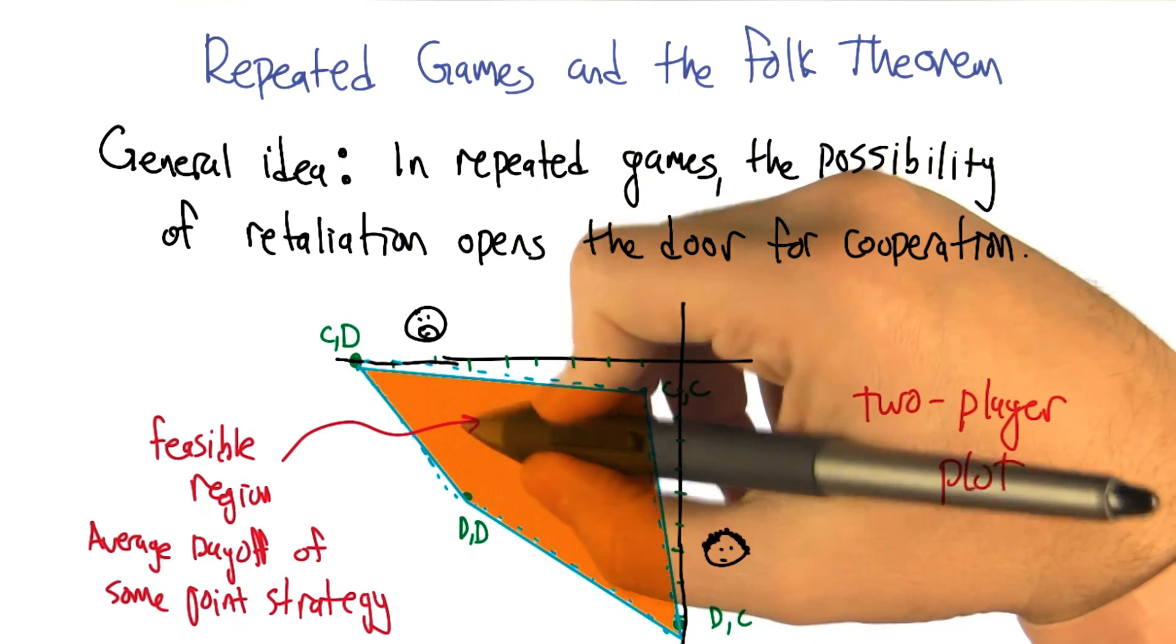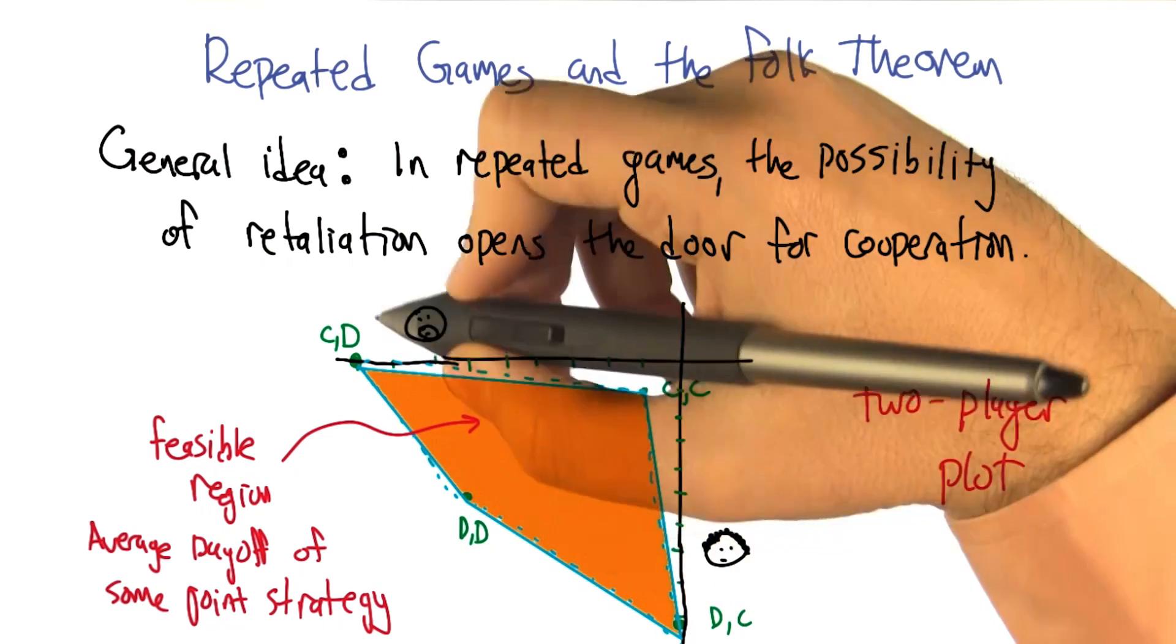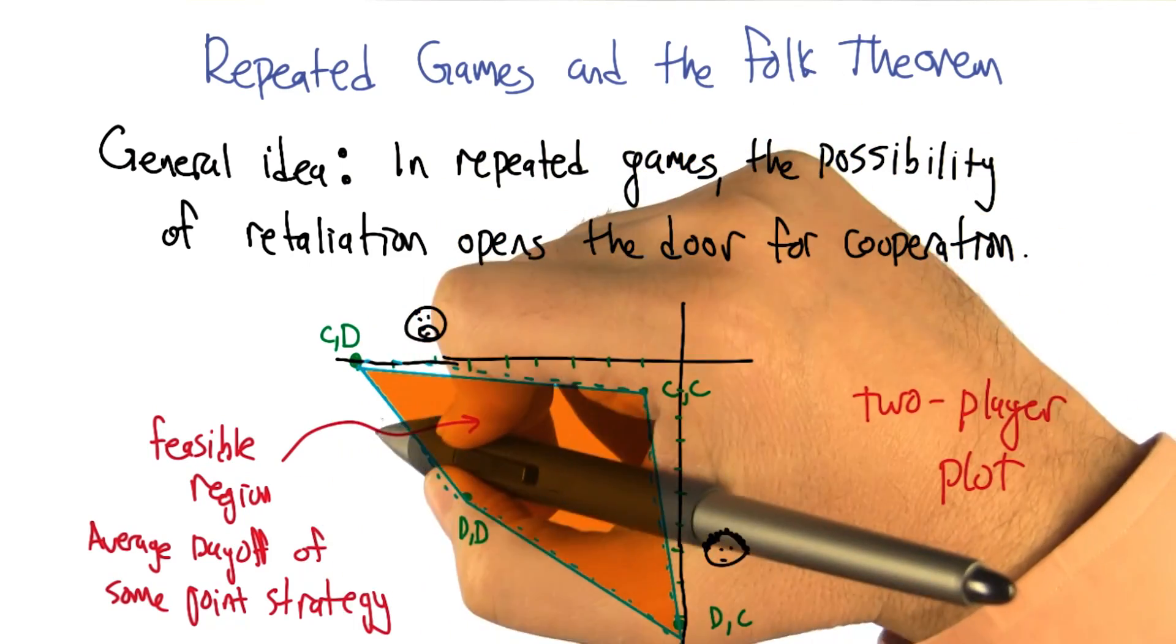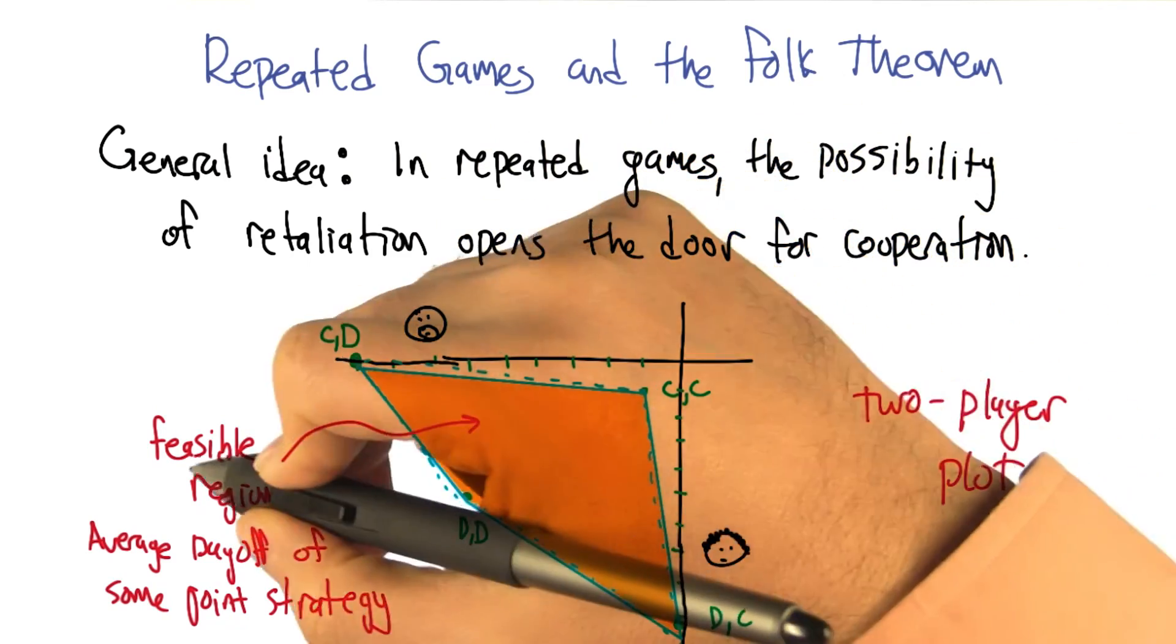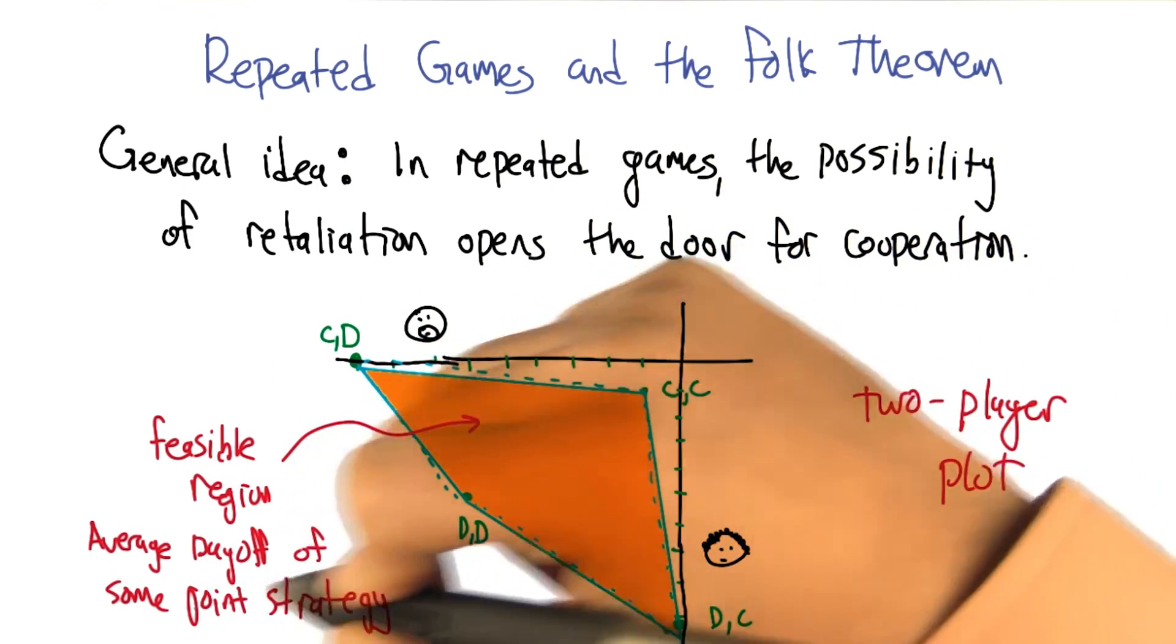All right, so through the magic of computer graphics, I have a slightly better depiction of this particular region now. As you pointed out, this convex hull of the points is really important. And what it represents is the, we can call it the feasible region. These are average payoffs of some joint strategy.